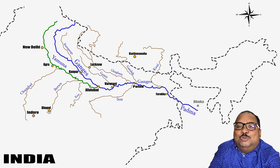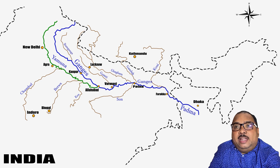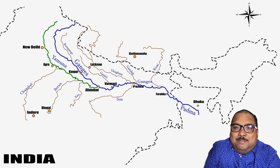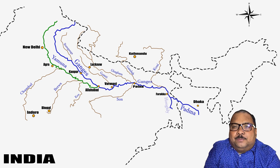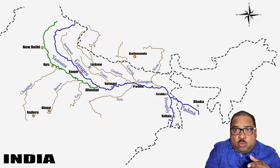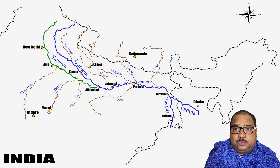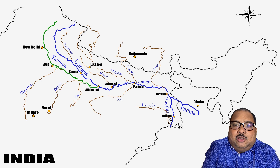In West Bengal, near Murshidabad, there is a place called Farakka. A barrage has been constructed at Farakka which regulates the flow of water of the Ganga river in West Bengal and Bangladesh. From Farakka, the mainstream of Ganga enters Bangladesh and is there known as Padma. Another distributary of Ganga flows through West Bengal and is known as Bhagirathi-Hooghly. The Hooghly river falls into the Bay of Bengal.